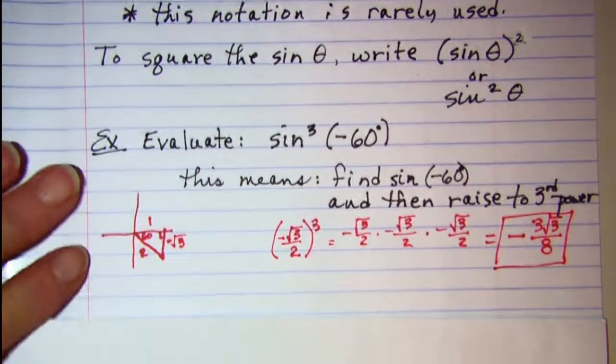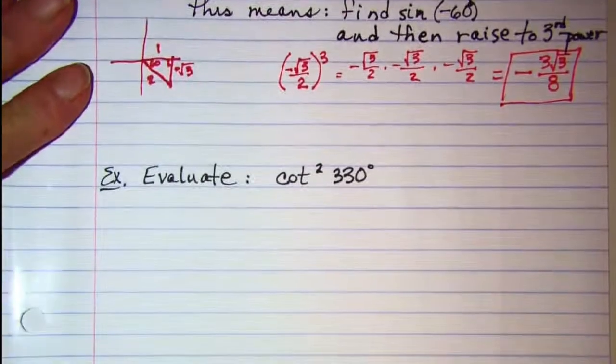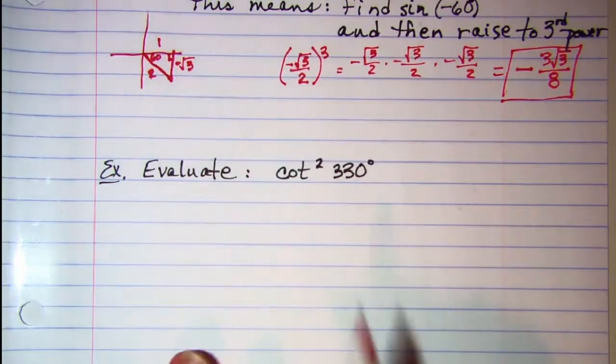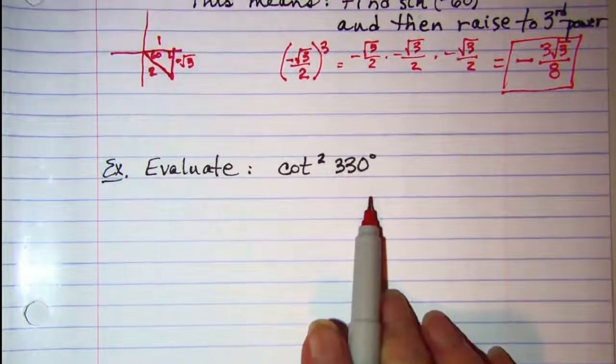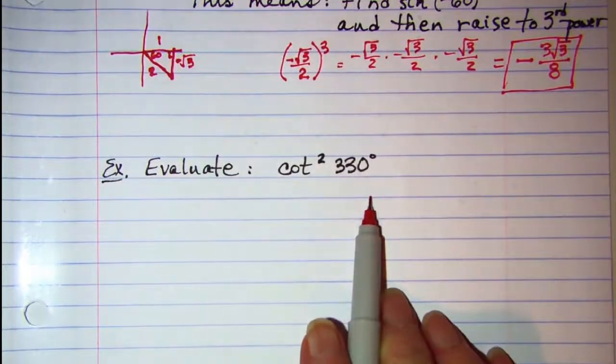Let's do another one. This one we are asked to square the cotangent of 330°.